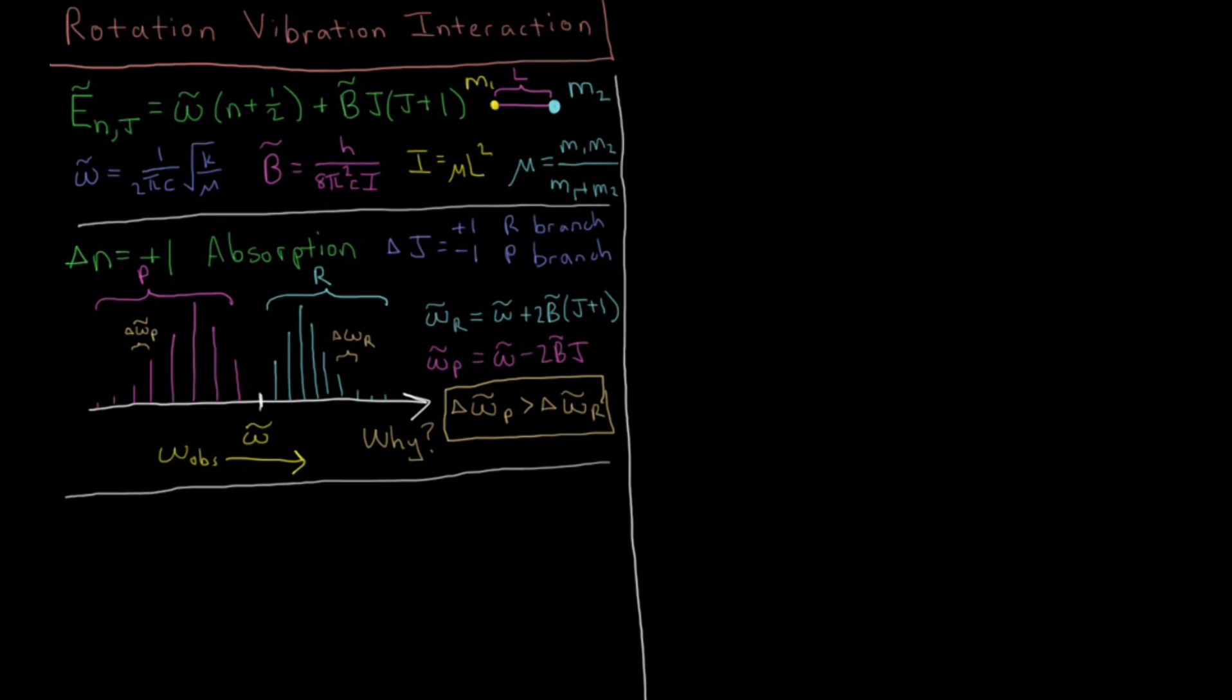In this video we're going to look at the interaction between rotational energy levels and vibrational energy levels and how this interaction leads to deviations from this ideal type of rovibrational spectrum which we looked at, where the spacing between peaks in the P branch and the R branch is the same.